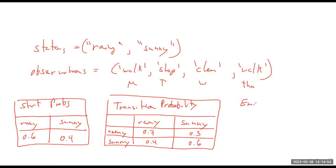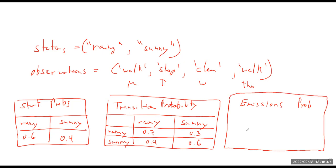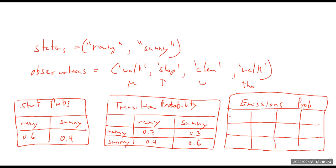The last table is the emissions probability — the conditional data. The emissions probability table has rows for the states and columns for the observations. What is the probability of walk, shop, or clean given that it is rainy or sunny? For example: the probability that you walk given it's rainy is 0.1 — probably low. The probability that you shop given it's rainy is 0.4.